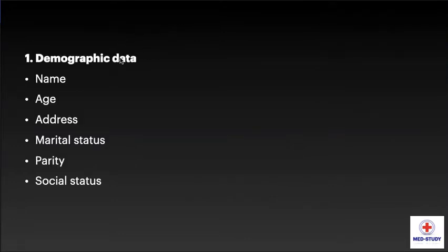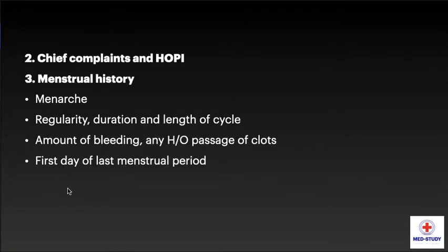The first point is demographic data, which includes name, age, address, marital status, parity, and social status of the patient. Then, going to chief complaints and HOPI: the chief complaint should be taken in chronological order, and HOPI should elaborate on each and every chief complaint in detail — that is, the history of present illness.